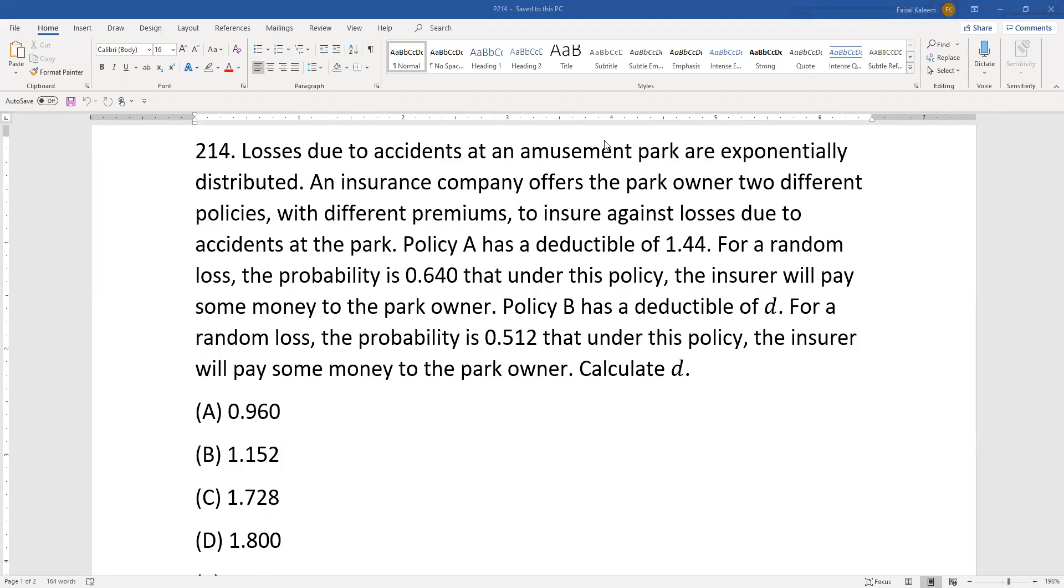Losses due to accidents at an amusement park are exponentially distributed. An insurance company offers the park owner two different policies with different premiums to insure against losses due to accidents. Policy A has a deductible of 1.44. For a random loss, the probability